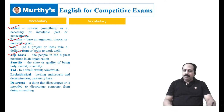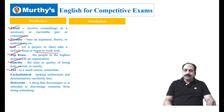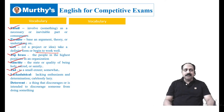Top brass of an organization — the people in the highest positions in an organization. At the top of the hierarchy or organogram we have top management people. When we refer to those people, we use the expression 'the top brass.' Sanctity — the state or quality of being holy, sacred, or saintly. Tad — to a small extent, somewhat, not substantial. Lackadaisical — lacking enthusiasm and determination, carelessly lazy. This also goes with performance or response: a lackadaisical response, a lukewarm response. Deterrent — a thing that discourages or is intended to discourage someone from doing something.